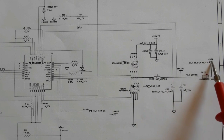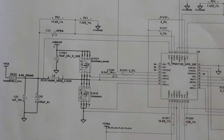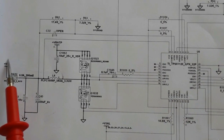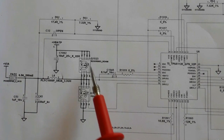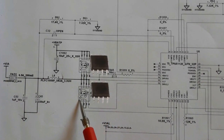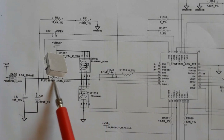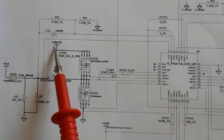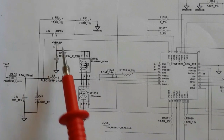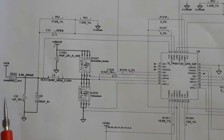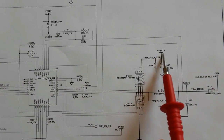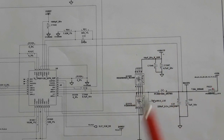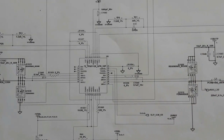In the 5-volt channel we get plus 5 volts. In the second channel we have plus 3 volts. We have two MOSFETs, inductor L4, two capacitors — one electrolytic capacitor and one ceramic capacitor — along with VBAT and a filtering capacitor.